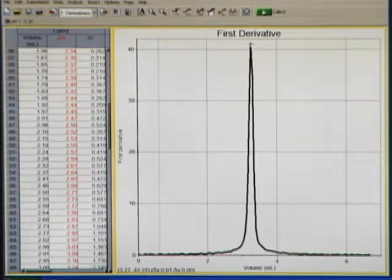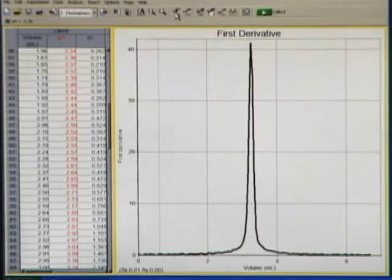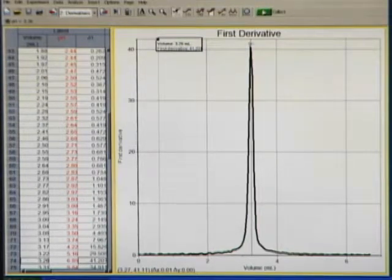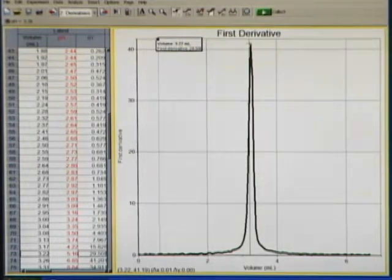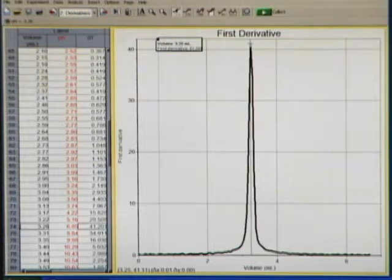The peak of this first derivative peak is going to tell us what our equivalence point volume would be. If I turn on the Examine button on the toolbar and come over here to the peak, it is showing us that the volume is around 3.2 milliliters for that equivalence point.